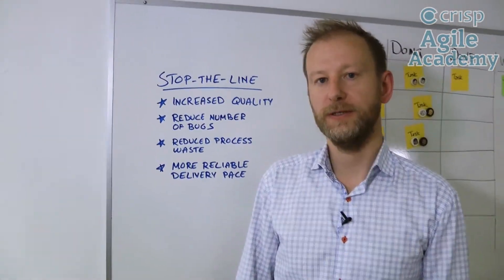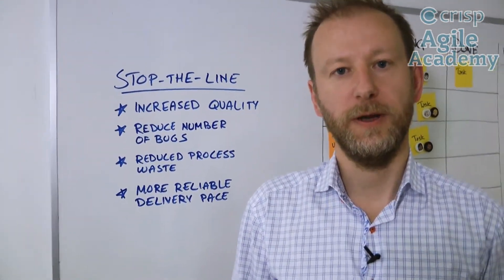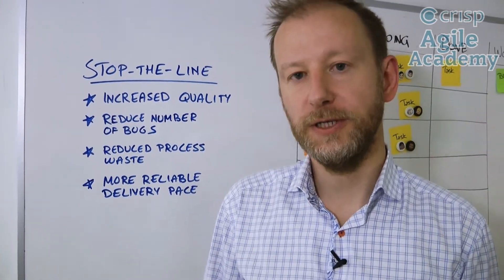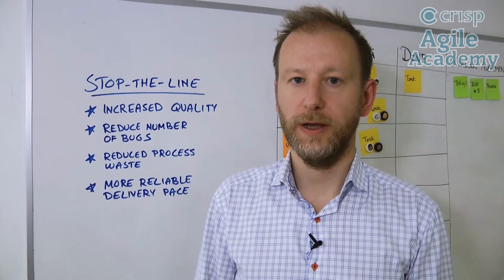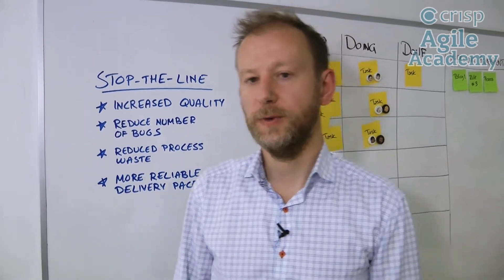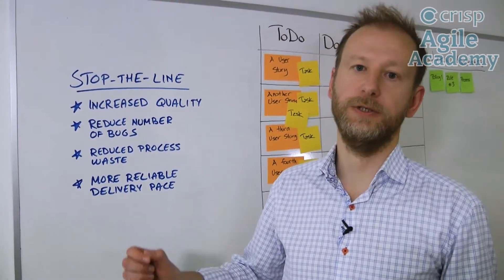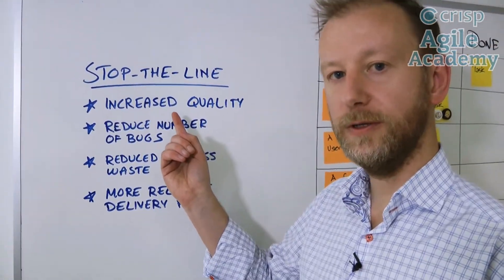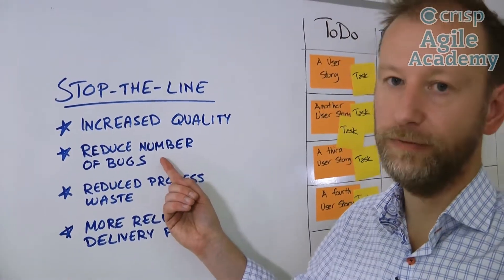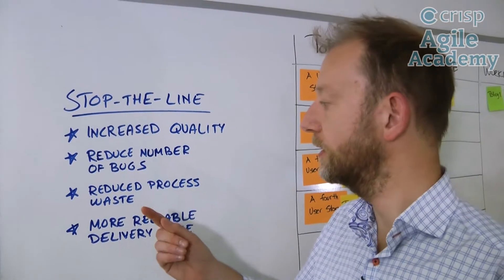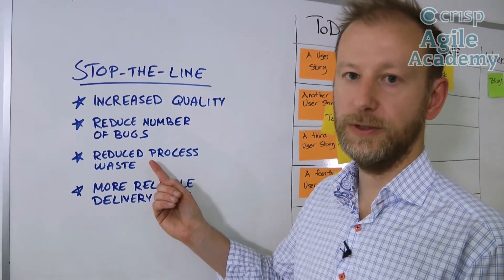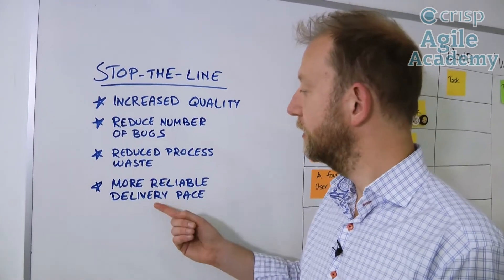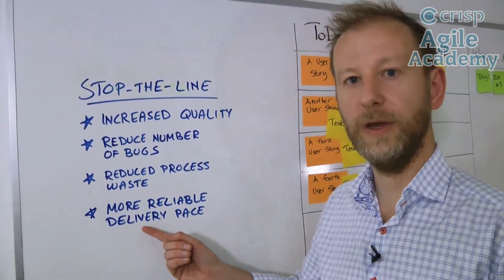So how will we implement this in software development? You need to understand that this is about change, and change is hard, but the change will be for the better. Stopping the line has several positive benefits: increased quality in the product, you will eventually reduce the number of bugs, you will have reduced process waste because you don't have to estimate or prioritize bugs, and you will have a more reliable delivery pace.